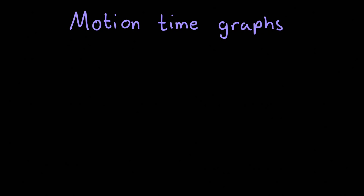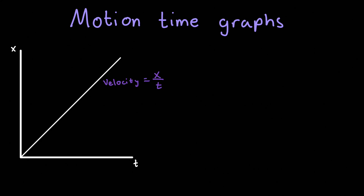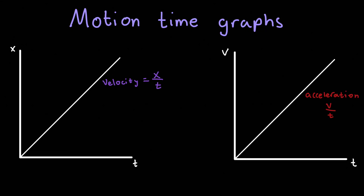Now let's discuss motion-time graphs in one dimension, starting with position versus time graphs. One dimension means we're moving in either a horizontal or vertical direction. The slope of the position versus time graph gives us velocity, since velocity is displacement over time. The area under the curve gives us nothing, since distance times time does not yield a meaningful quantity. The next graph is a velocity versus time graph, in which the slope is acceleration, and the area gives us displacement.